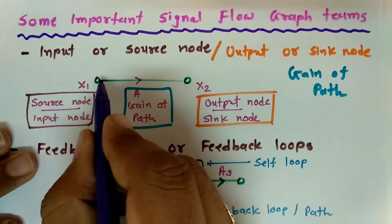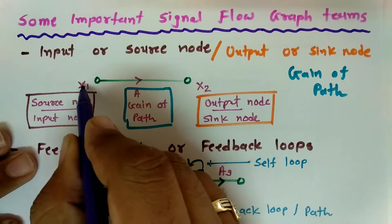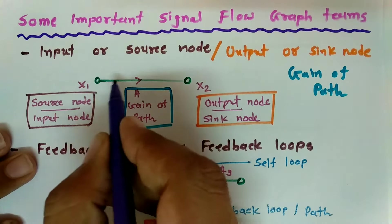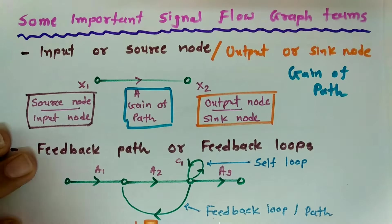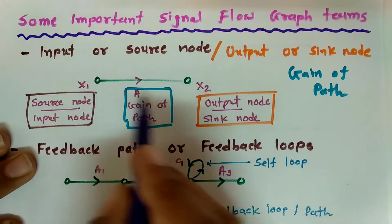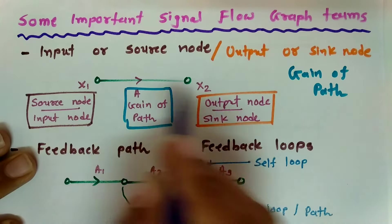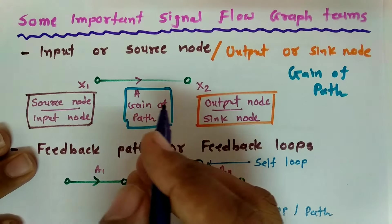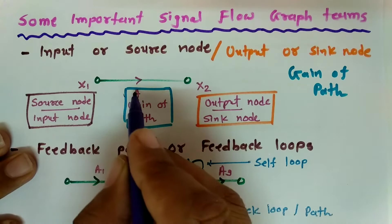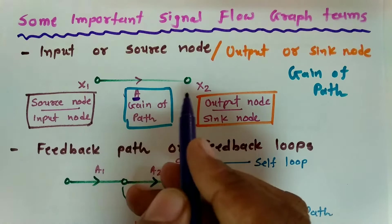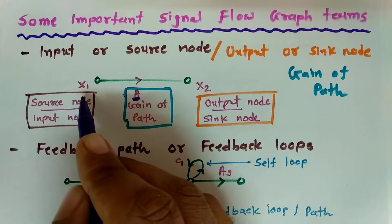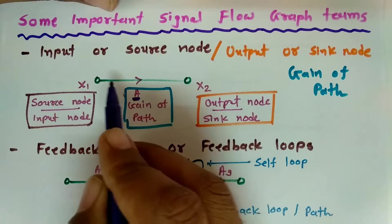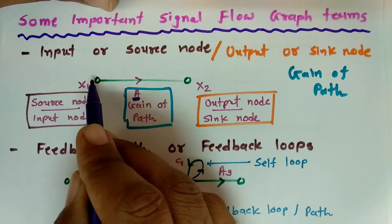If I am connecting just one link from here to here, then these two are nodes — x1 node and x2 node. If this is only a single link in this signal flow graph, then x1 node is the source node or input node, and x2 node is the output node or sink node. The gain of this path is justified by 'a' over here, so this link has gain a. x1 is the input node, x2 is the output node, and this arrow indicates the direction of signal flow.